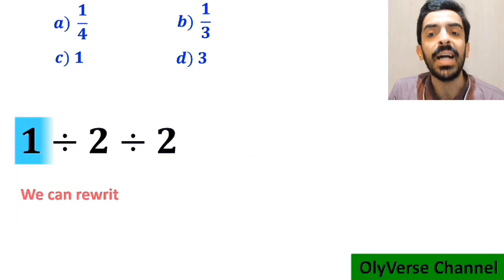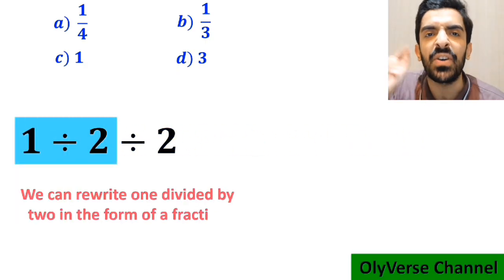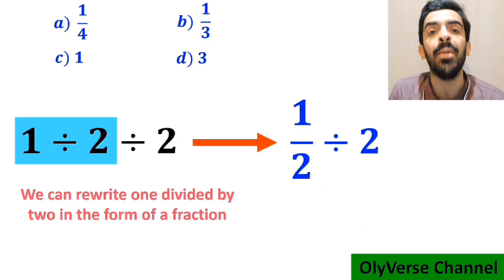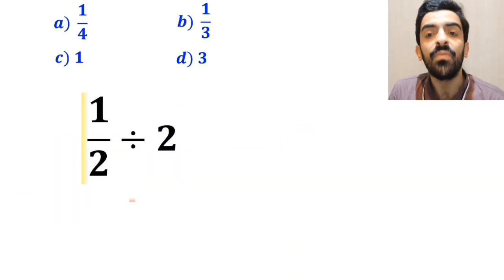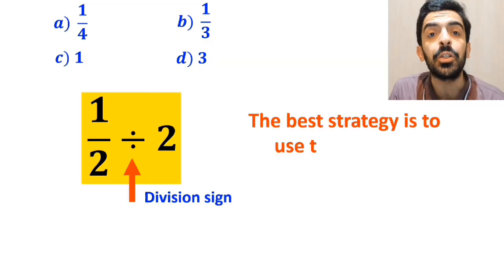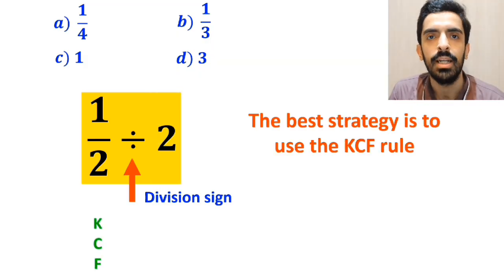Alright, whenever we see a division sign between two terms, the best strategy is to use the KCF rule. In this rule, K stands for keep the first fraction as it is. C stands for change the division sign to multiplication.